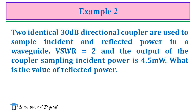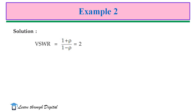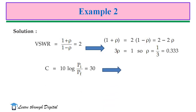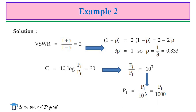From VSWR = 2, we write VSWR in terms of the reflection coefficient: (1 + rho) / (1 - rho) = 2. Simplifying, we get rho = 0.33. The coupling factor is given as: 10 log(PI / PF) = 30 dB, meaning PI / PF = 10³. Therefore, PF = PI / 1000, where PF is the power travelling in the forward direction.